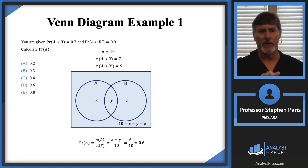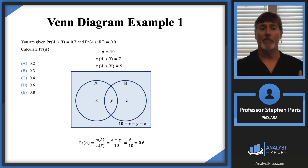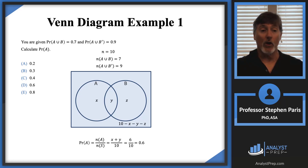One observation: looking at the answer choices, 0.2 and 0.8 add up to one, and 0.4 and 0.6 add up to one — these are complementary probabilities. So I expect the answer to come from one of those four choices. Answer choice B, 0.3, doesn't have a complementary counterpart in the choices, so it's likely not the answer. More times than not, that trick is helpful.